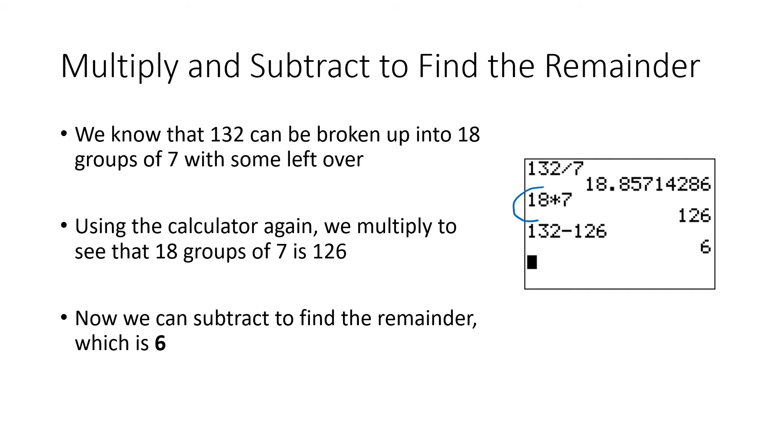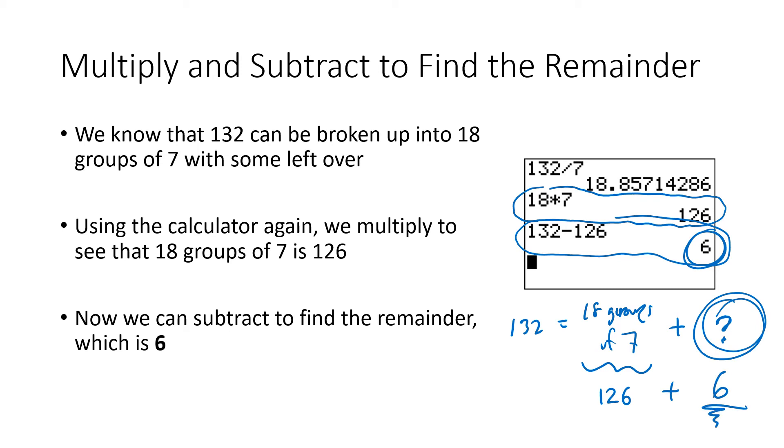What we're going to do on our calculator is figure out what is 18 groups of 7. Well, 18 times 7 is 126. So that means that my 132 is 18 groups of 7 plus some more. And how many more, that's the question. That's the thing that I'm trying to figure out. 18 groups of 7 on my calculator is 126. And so the question is 126 plus how many is going to give me my 132. So I subtract to figure that out. I take 132 minus 126, and that's going to give me my 6 as my remainder. So 6 is the remainder when I divide 132 by 7.